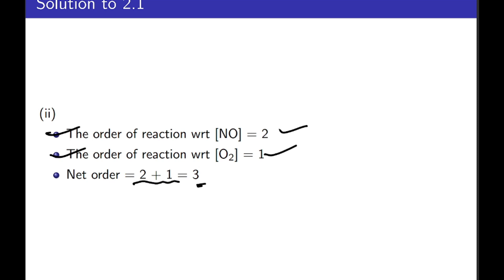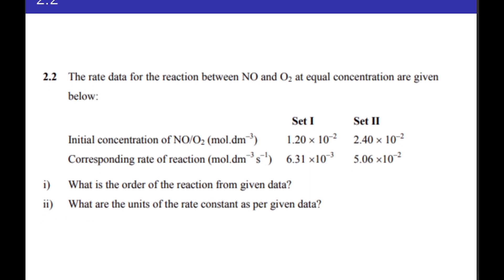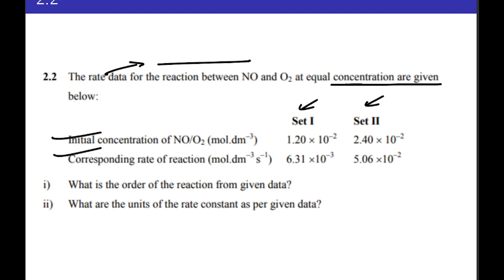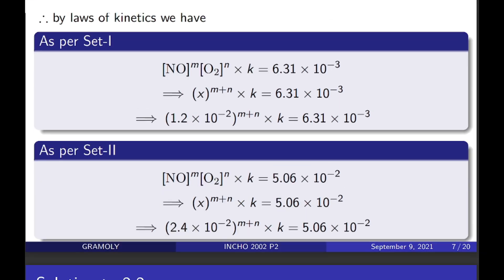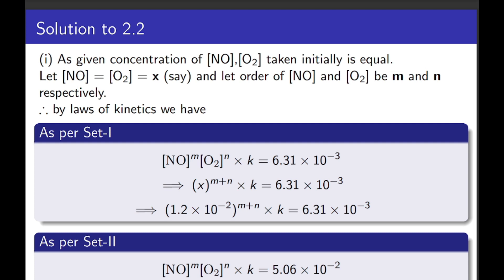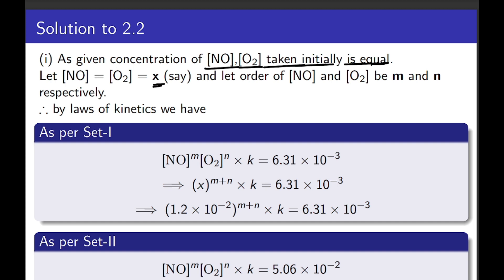Now let's proceed to the second part. Here, the rate data of the reaction between NO and O₂ at equal concentrations are given in a tabular form. What it is asking from us is to find the order of the reaction from the given data, as well as the units of the rate constant.